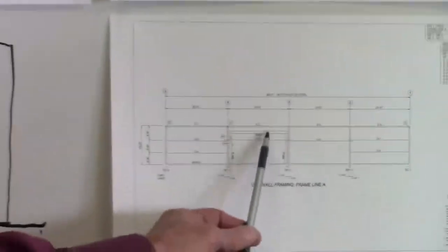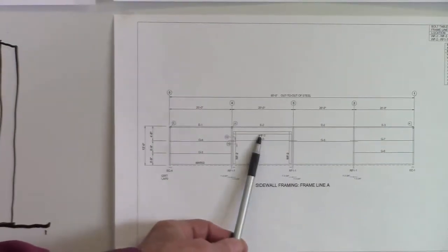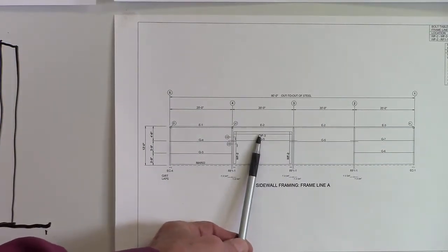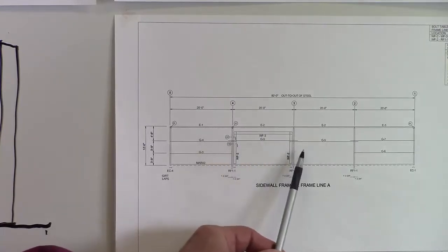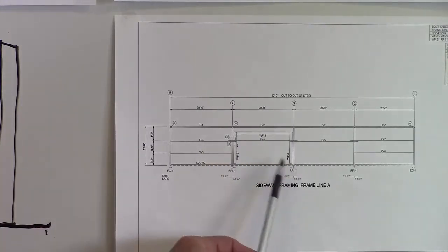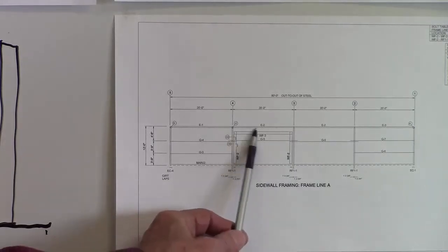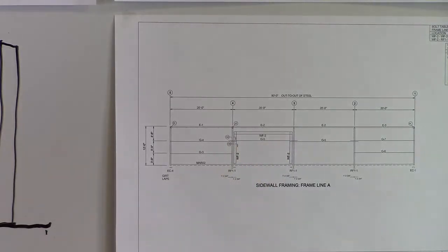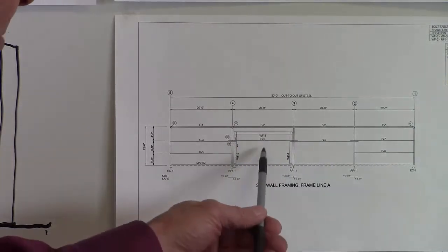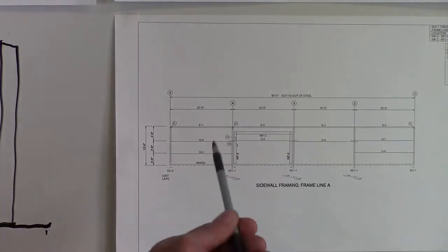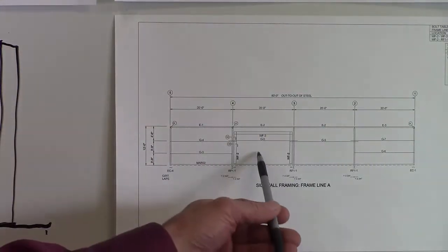Our portal frames. The portal frame is a U-shaped steel member with I-beam construction that will bolt into the web of the columns and go horizontally across the top. This is probably one of the best other than your cable bracing that you could want.